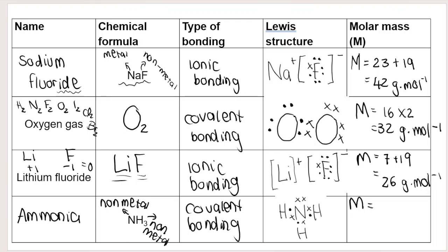Molar mass of ammonia: we take the molar mass of nitrogen, which is 14, and add the molar mass of hydrogen, which is 1, multiplied by three because there are three hydrogen atoms in every ammonia molecule. That gives us 17 grams per mole. We've done a full exam question that summarized ionic bonding and covalent bonding beautifully. Please let me know in the comments what else you want to see — I'm here to help you ace your exams. See you in the next video!